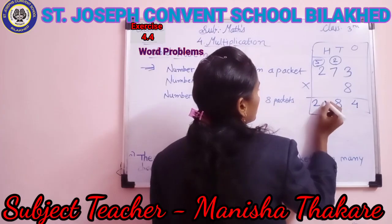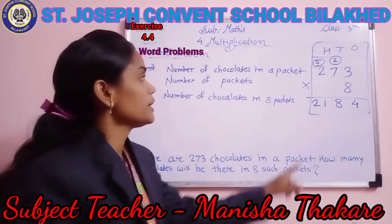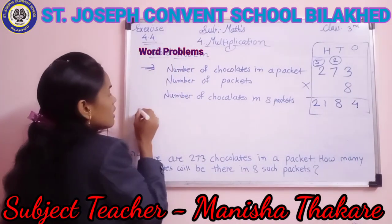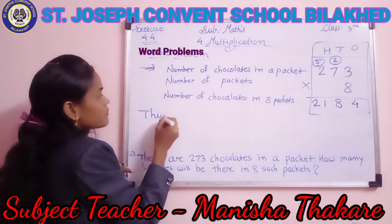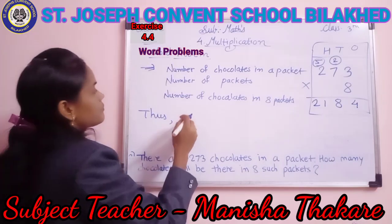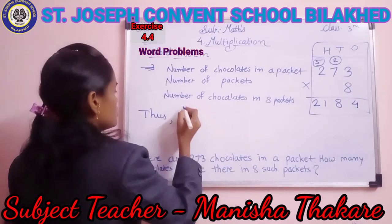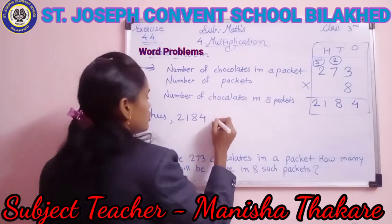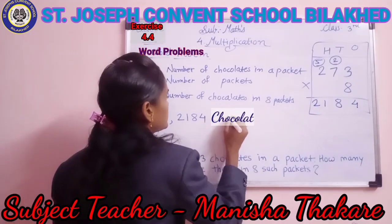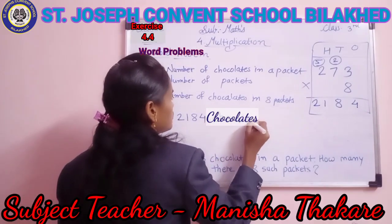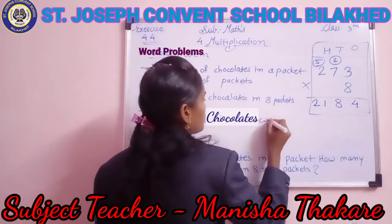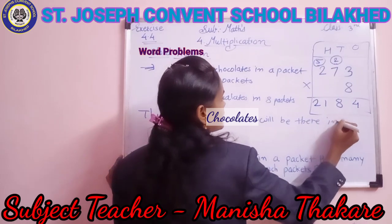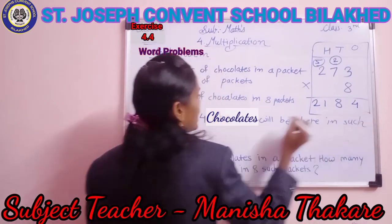We write 21. Our answer is 2,184. Thus, our final line: 2,184 chocolates will be there in 8 such packets.